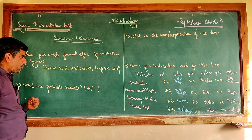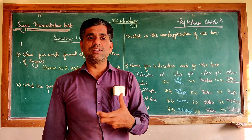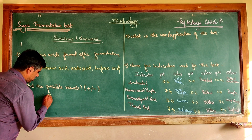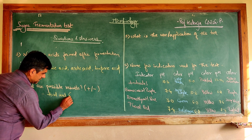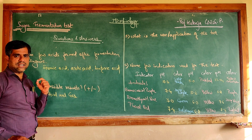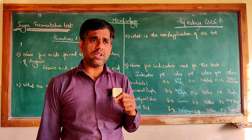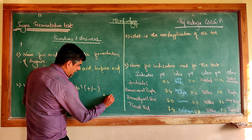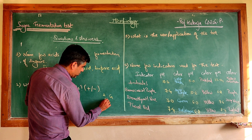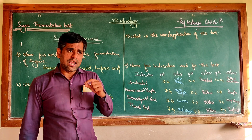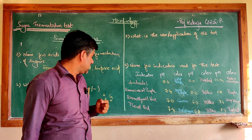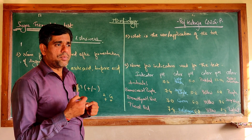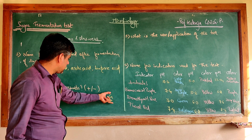The next question: what are the possible results when performing this test? In a particular tube there may be production of both acid and gas, which we detect by formation of bubbles in the inverted Durham's tube. We represent this as A and G — acid positive and gas positive. If the indicator has changed color, it is positive for acid; if the Durham's tube shows air bubbles, it is positive for gas.